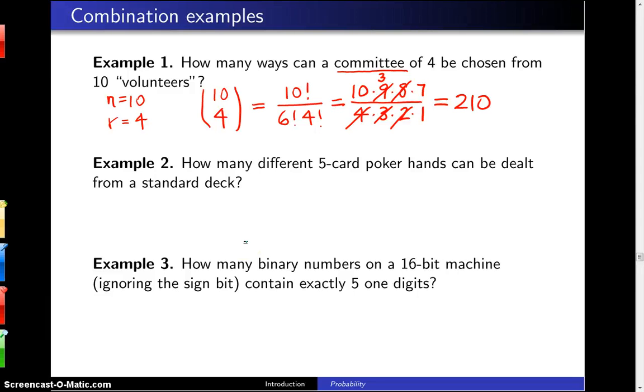How many different five-card poker hands can be dealt from a standard deck? In this case we have n equals 52 items and we are going to select five of those without replacement from the deck.